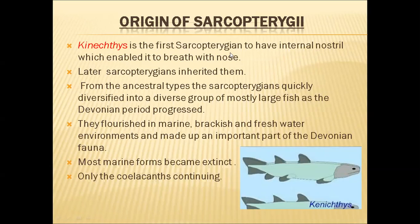Later, all remaining successors of Sarcopterygii fishes also possessed these internal nostrils — we can see internal nostrils in lungfishes living now. The ancestral tribes of Sarcopterygii quickly diversified into diverse groups of mostly large fishes as the Devonian period progressed. The Devonian is also called the golden age of fishes. During the Devonian period, Sarcopterygii diversified into different types, and a vast diversity of Sarcopterygii fishes was established.